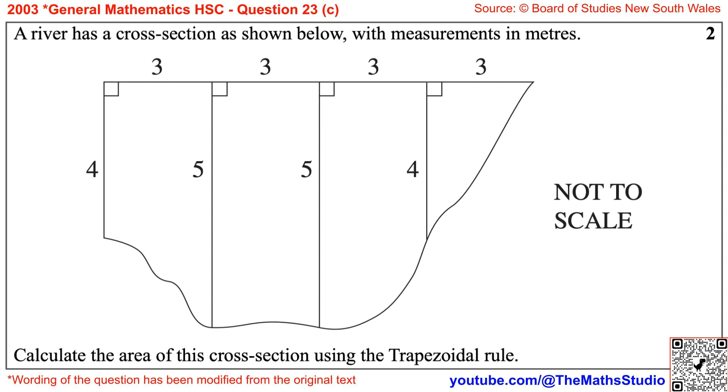Question 23, Part C. Note that the wording of the question has been modified from the original text. A river has a cross section as shown below, with measurements in meters.